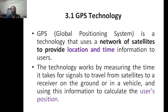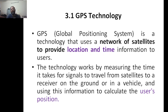GPS technology — the Global Positioning System — is a technology that uses a network of satellites to provide location and time information to users. The technology works by measuring the time it takes for signals to travel from the satellite to the receiver on the ground or in a vehicle.